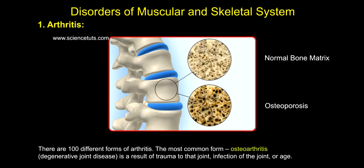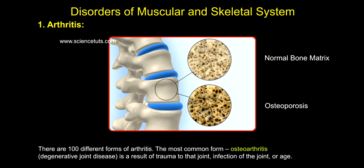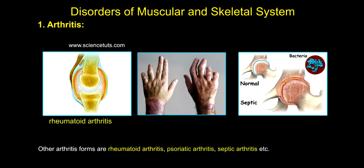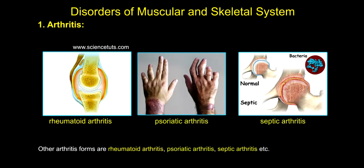There are 100 different forms of arthritis. The most common form is osteoarthritis, a degenerative joint disease, which is a result of trauma to the joint, infection of the joint, or age. Other arthritis forms include rheumatoid arthritis, psoriatic arthritis, septic arthritis, etc.